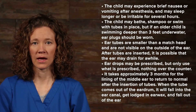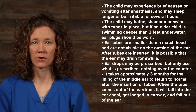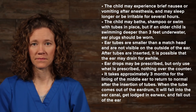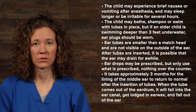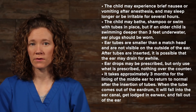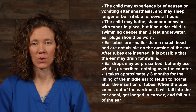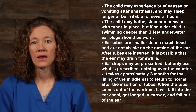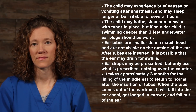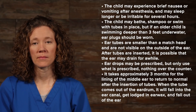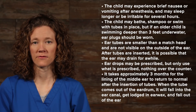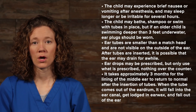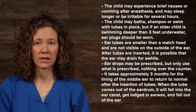Patient education for post-op placement of ear tubes includes educating the patient that the child may experience brief nausea or vomiting after anesthesia and may sleep longer that day or be irritable for several hours. The child may bathe, shampoo, or swim with tubes in place, but if an older child is swimming deeper than three feet underwater, earplugs should be worn. Ear tubes are smaller than a match head and are not visible on the outside of the ear, but can be seen with an otoscope. After tubes are inserted, it is possible that the ear may drain for a while, especially during upper respiratory infections. Ear drops may be prescribed, but only use what is prescribed — nothing over the counter.